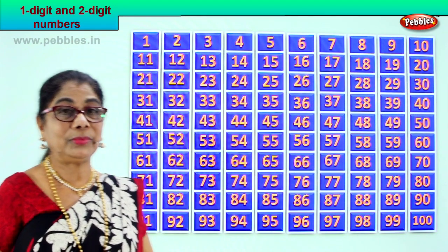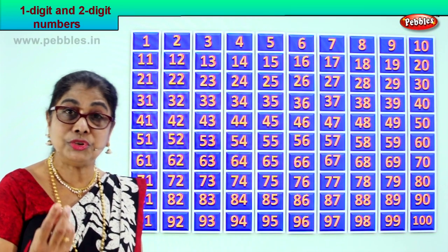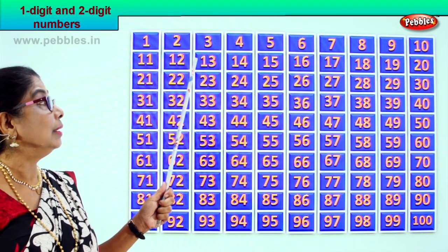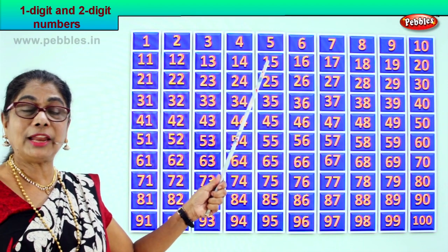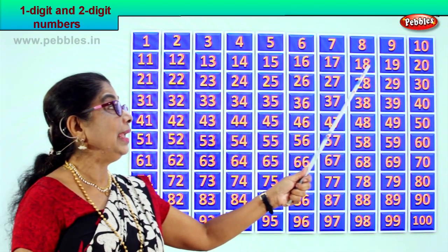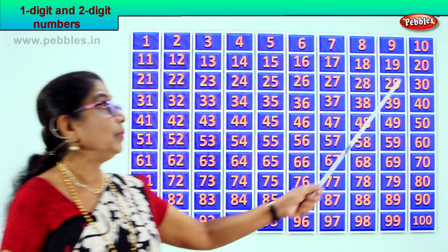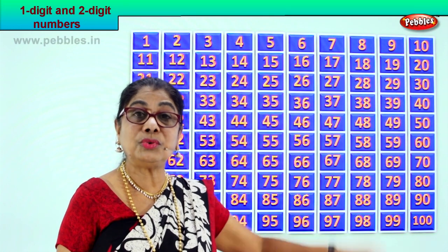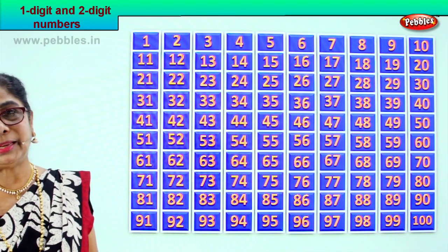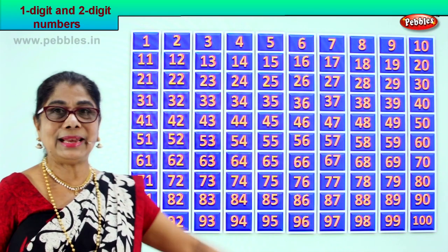And 20. So you have 1 and 0 — 10 — the smallest two-digit number. Then 1 and 1 is 11, 1 and 2 is 12, 1 and 3 is 13, 1 and 4 is 14, 1 and 5 is 15, 1 and 6 is 16, 1 and 7 is 17, 1 and 8 is 18, 1 and 9 is 19. All these are two-digit numbers. Now 2 and 0 — 20 — with 0 in the ones place and 2 in the tens place. They are all two-digit numbers.